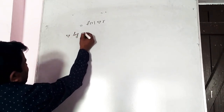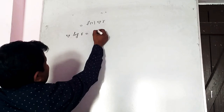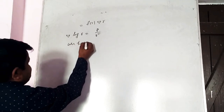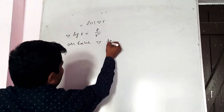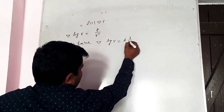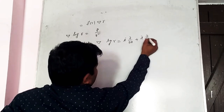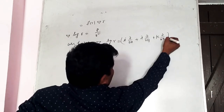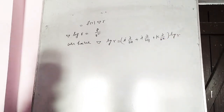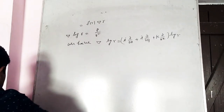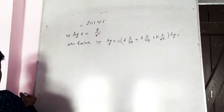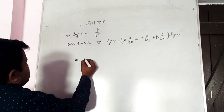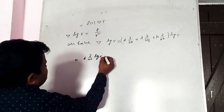Next problem: del(log r) = r⃗/r². We have del(log r) = (i ∂/∂x + j ∂/∂y + k ∂/∂z) log r.